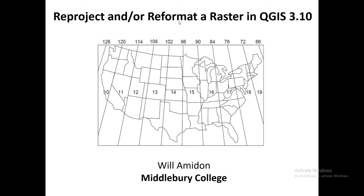Likewise, you may have a file that's in a format that's very space-intensive, like a 32-bit floating point. You may want to downsample that into an integer format to save space, and we're going to look at that today too.